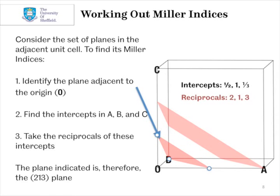Next, we need to find where this plane intercepts in A, B and C. You can see that the intercept is halfway along A, so it's at one half. It intersects B at the corner, so one, and about a third of the way up C. So we'll call that one third. So the intercepts are a half, one, one third.